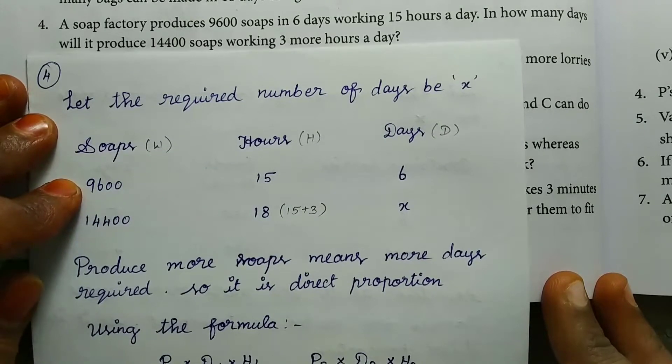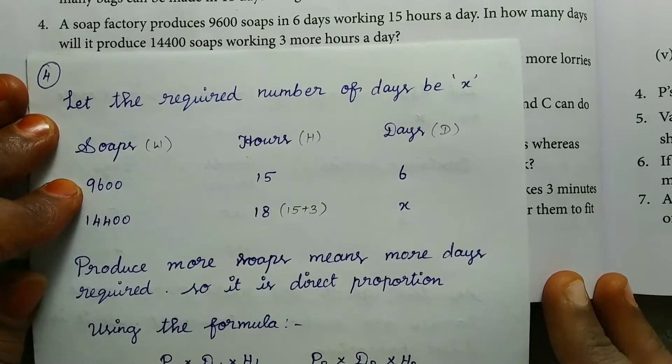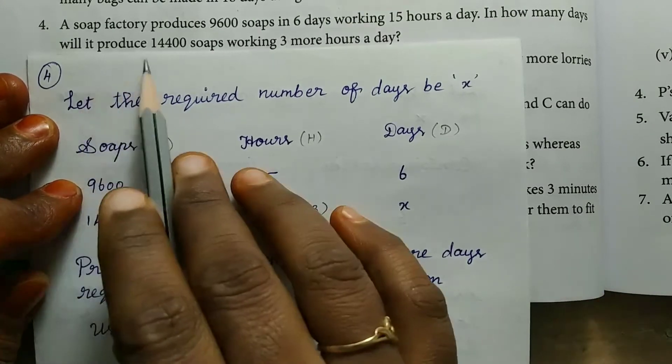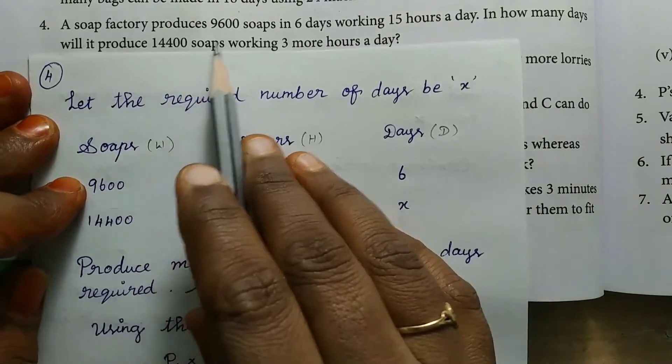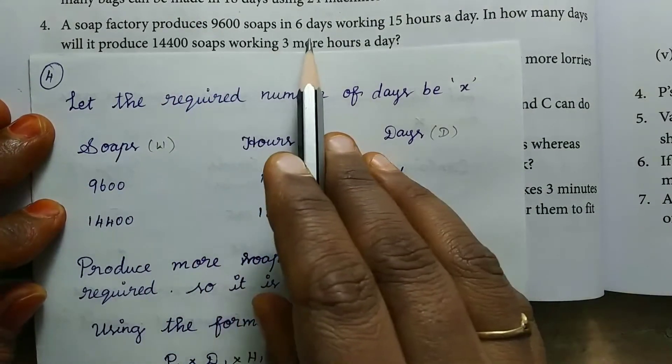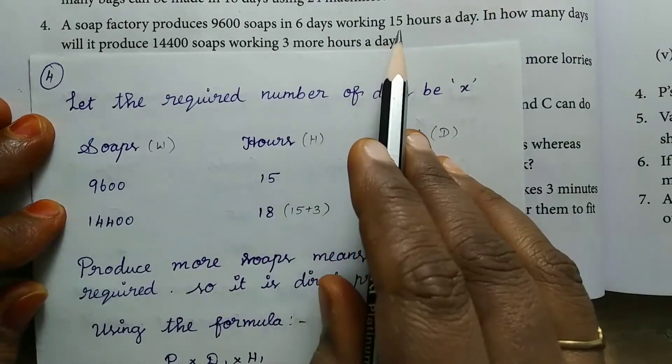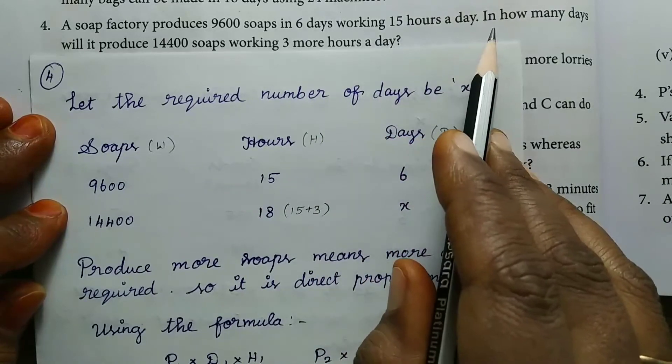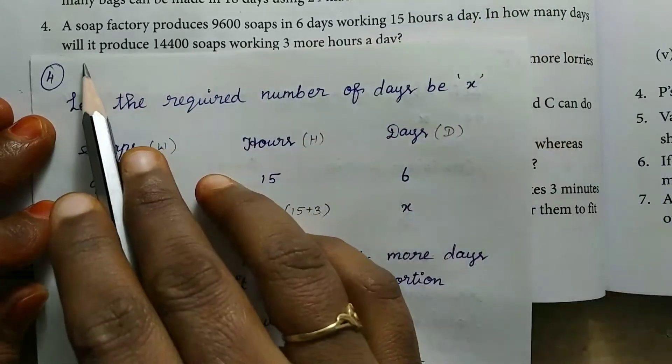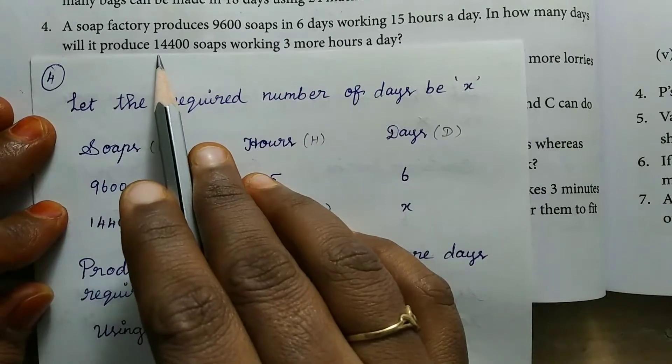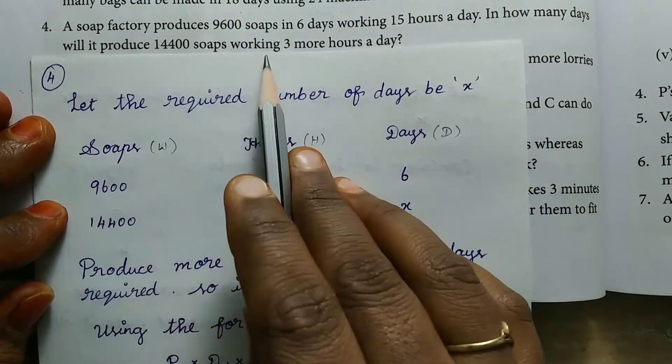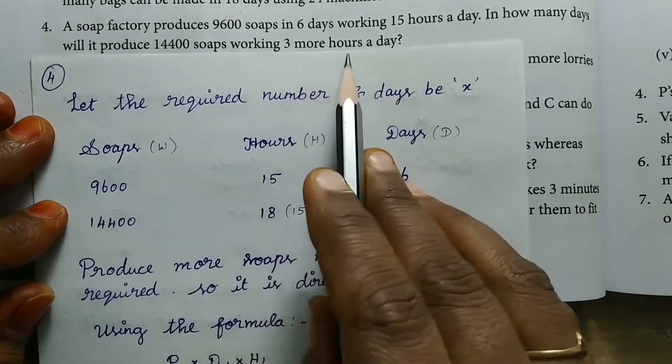In the channel, 8th Standard Maths Full Book Edition Chapter 4 Exercise 4.4. A soap factory produced 9600 soaps in 6 days working 15 hours a day. In how many days will it produce 14400 soaps working 3 more hours a day?